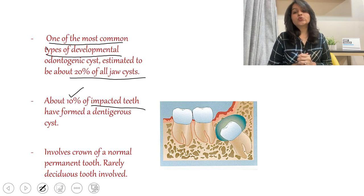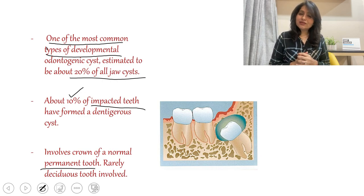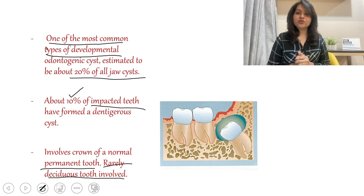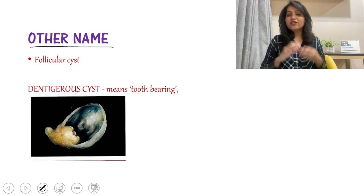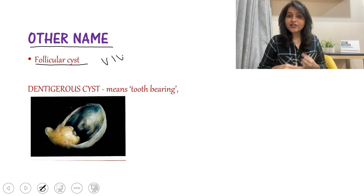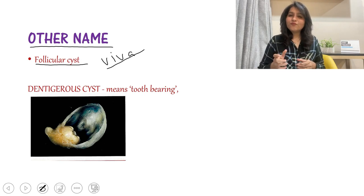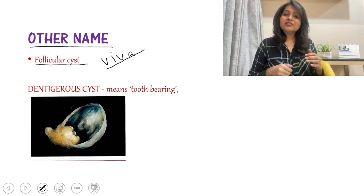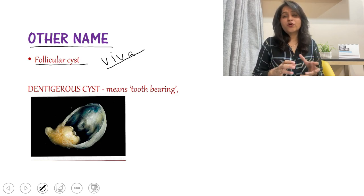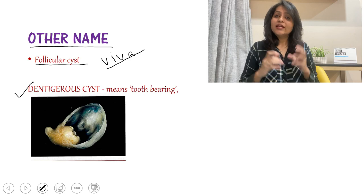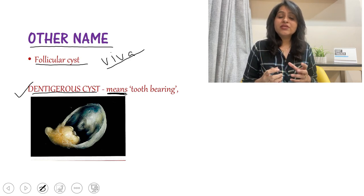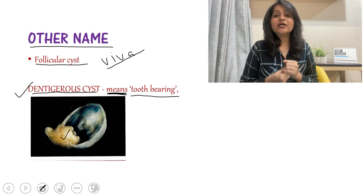It is usually associated with a normal permanent impacted tooth and sometimes with a deciduous tooth. The other name for dentigerous cyst is follicular cyst — this can be a viva question. However, the term follicular cyst is not very apt since it implies mesodermal origin and is usually used for follicular cyst of the ovary or hair follicular cyst. The more appropriate name is dentigerous cyst, because the word 'dentigerous' means tooth-bearing, and since this cyst contains a tooth within the lumen, it is the most appropriate name.